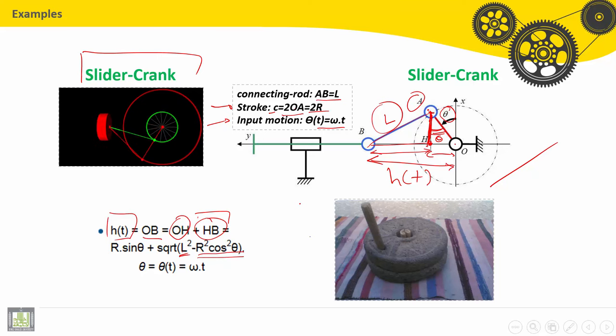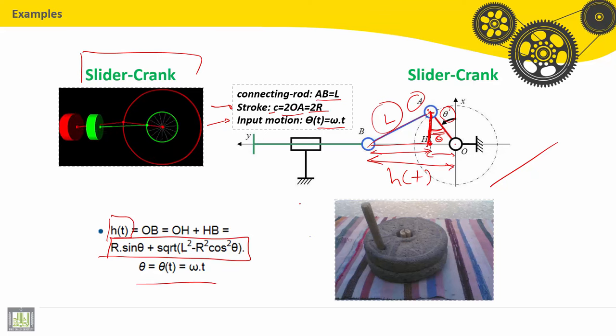Finally we get this result. H(T), the instantaneous position of the piston, is equal to R sine theta, where theta is the input omega T, plus the square root of L squared minus R squared cosine theta squared. Cosine theta squared comes from this triangle ABH.